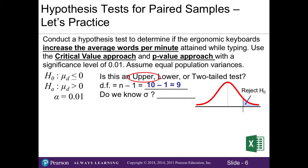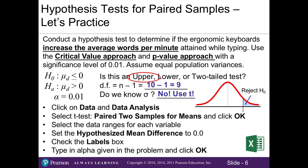The population standard deviation was not mentioned anywhere in the problem, and sigma was not given to us, so we do not know the population standard deviations and therefore we'll be working with t-values. In this problem we're going to use Excel, and here are the steps to conduct a paired samples t-test.